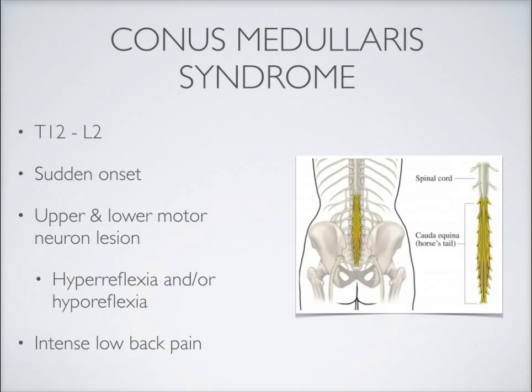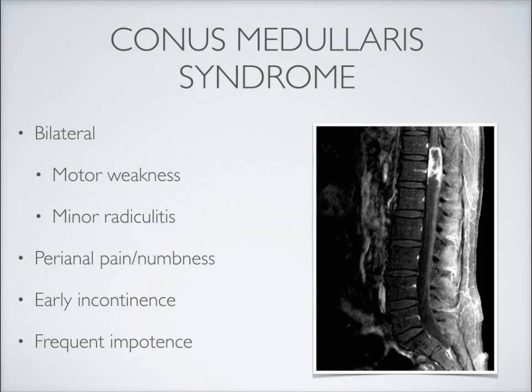The manifestations of an upper motor neuron lesion will be hyperreflexia, and the manifestations of a lower motor neuron lesion will be hyporeflexia. We can see both prominently in lower extremity neurologic findings. Most of the time the back pain and neurologic findings are bilateral, with fairly prominent bilateral lower extremity motor weakness and minor radiculitis — again usually bilateral. As far as reflexes, this tends to preserve the knee jerk reflex while affecting the ankle jerk reflex, which could be hyperreflexic or reduced.